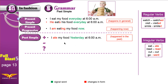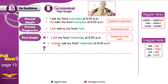This positive sentence is: I ate my food yesterday at 6 a.m. 'Yesterday' is the signal word. How do we form the negative? In the present simple we use 'don't' and 'doesn't.' In the past, instead of using 'don't' or 'doesn't,' we use 'didn't.'